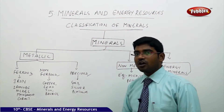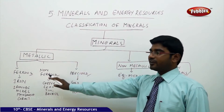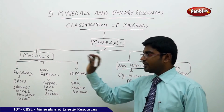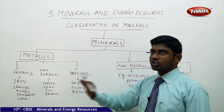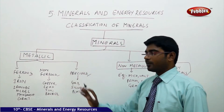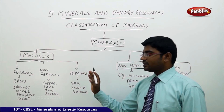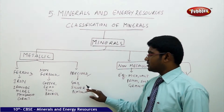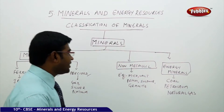Precious minerals like gold, silver, and platinum are costlier compared to non-ferrous minerals. So, metallic minerals are divided into ferrous — iron, iron ore, nickel, manganese, cobalt — non-ferrous — copper, lead, tin, bauxite — and precious — gold, silver, and platinum.